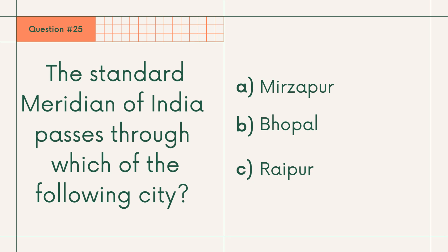Question 25: The standard meridian of India passes through which of the following cities? A. Mirzapur. Answer: A. Mirzapur.